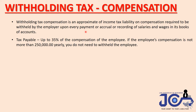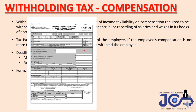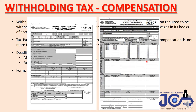We suggest to all our clients that when registering, we immediately include withholding tax on compensation, because it's part of our duty as an employer — eventually you will have employees exceeding 250,000 yearly. So let's make it a habit. If no employee exceeds 250,000 yearly, just file it as zero. The monthly deadline is every 10th and the annual deadline is January 31st. Forms used: 1601C for monthly and 1604CF for annual.